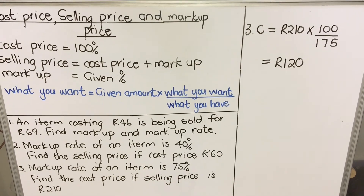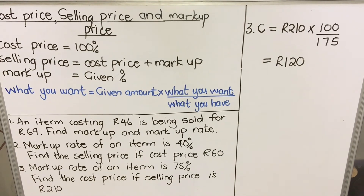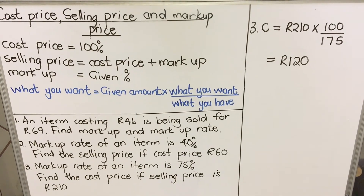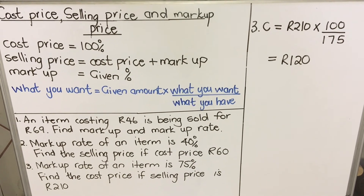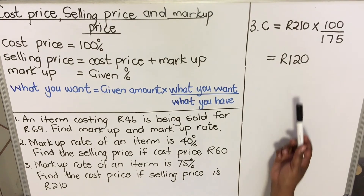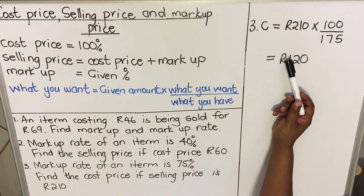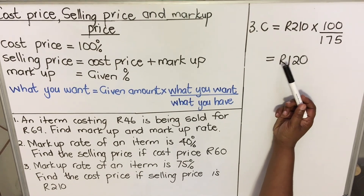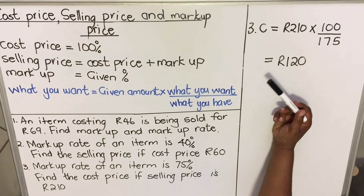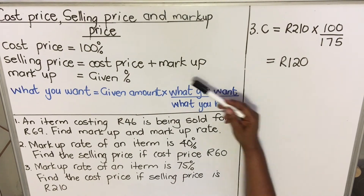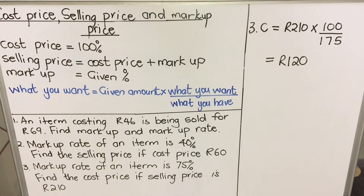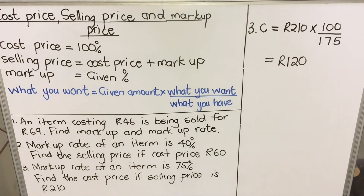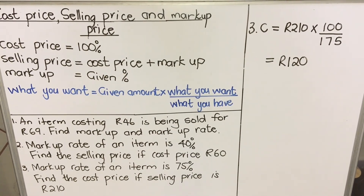This is how you use this formula to calculate cost price, markup price, or whatever you are asked. The cost price is the amount you bought the goods with, whether you're producing or buying them. The selling price is what you sell for, and the markup is the profit. You can always calculate your profit using this formula. This is the end — thank you for watching.